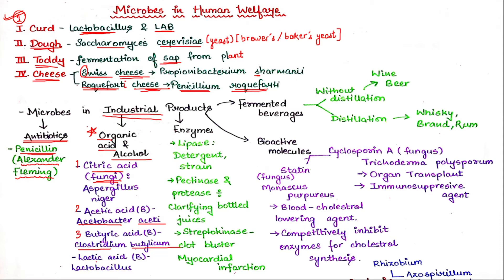The next one, number four, is Lactic acid. Now moving on to enzymes. We start with Lipase — we use Lipase in detergent. If anyone has a shirt with stains, or for dry cleaning, we use the Lipase enzyme so that we can remove stains from clothes.